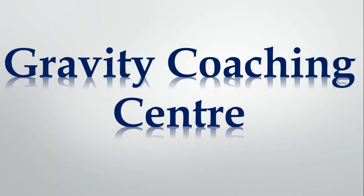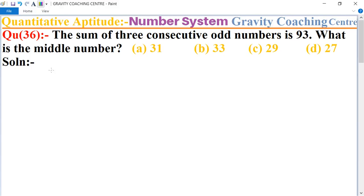Welcome to our channel, Gravity Coaching Centre. Quantitative Aptitude, Chapter Number System, Question Number 36: The sum of three consecutive odd numbers is 93.